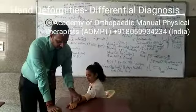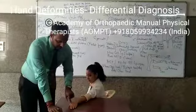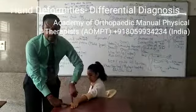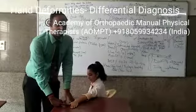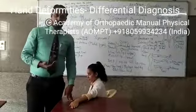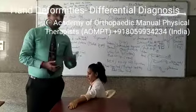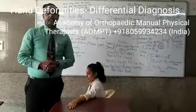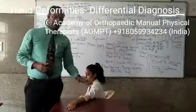Adductor pollicis is felt posteriorly. You can resist adduction to test adductor pollicis, which is supplied by the ulnar nerve. There are various special tests to check various nerve functions of the hand. Deformity observation itself will give a clue on what conditions are likely affecting the patient.